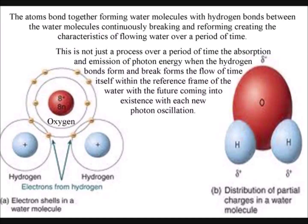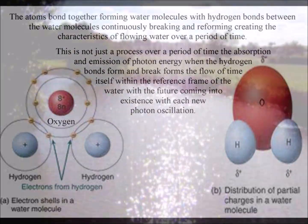How do oxygen and hydrogen atoms bond together to form the characteristics of water? We have oxygen and hydrogen forming standing waves over a period of time in the form of water molecules.